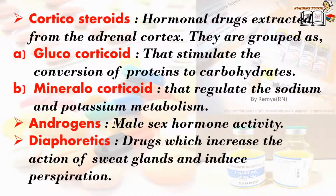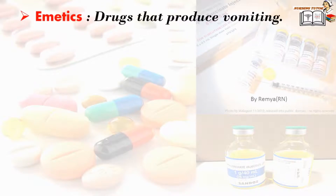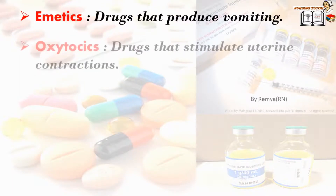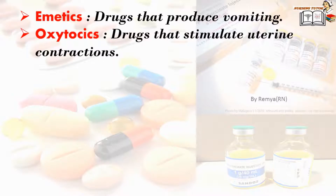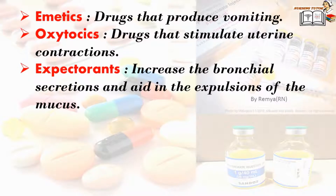Diaphoretics are drugs which increase the action of sweat glands and induce perspiration. Emetics are the drugs that produce vomiting. Oxytocics are the drugs that stimulate uterine contractions. Expectorants increase the bronchial secretions and aid in the expulsion of mucus.